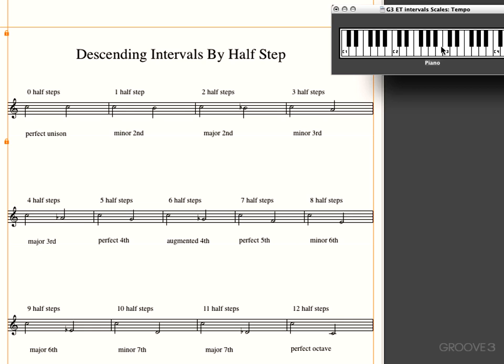We'll go down a minor second. Okay, two keys. Notice there's no black key here. We go down one half-step, it's a minor second. C to B, C to B-flat, two half-steps. It's a major second. C to A is a minor third, or three half-steps.